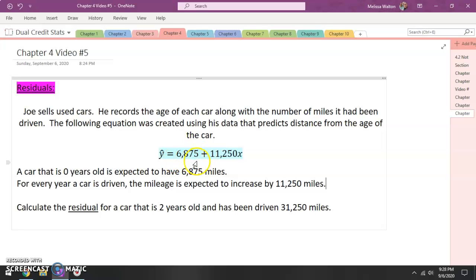All right, so that was kind of a side question, identifying what is the y-intercept, what is the slope. So let's go ahead and go on to the question that I originally was going to ask. Let's calculate the residual for a car that is two years old and has been driven 31,250 miles. So here is what a residual is. A residual is a comparison of the expected value and the actual value. And here's how we are going to calculate this. The residual of something is the actual value minus the expected value.